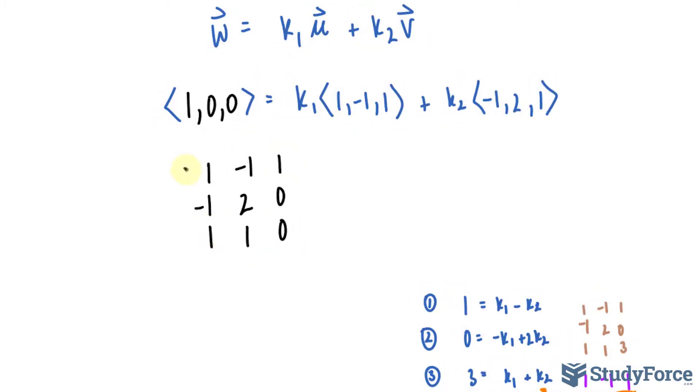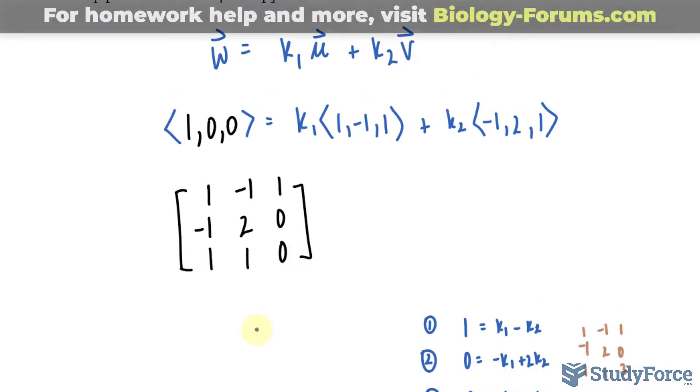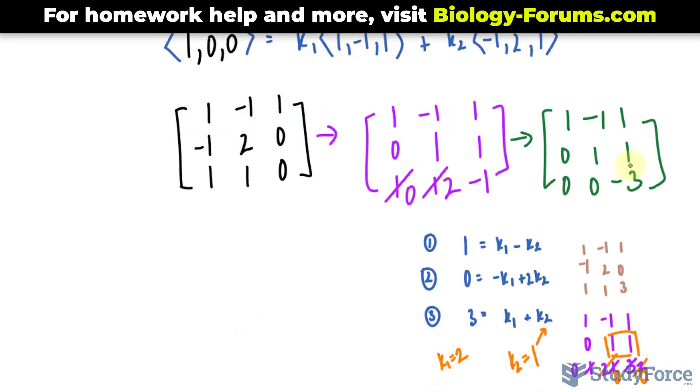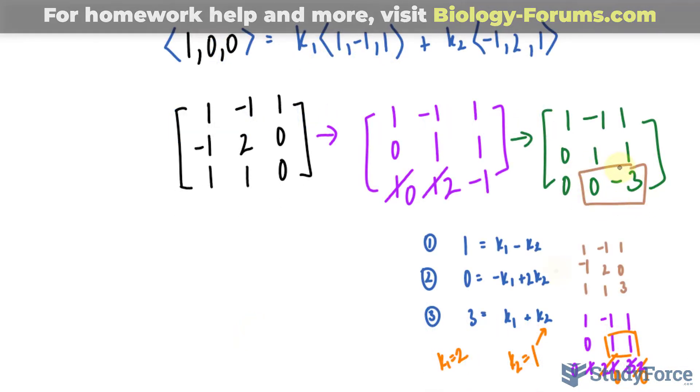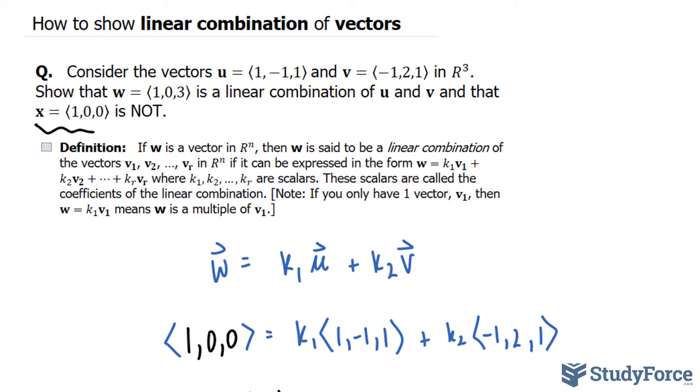As you can see, the first two columns are the same as before. And if you try to put this in reduced row echelon form, the resultant matrix will end up looking like this. This part shows an inconsistency in the matrix because what you're saying is 0 = -3, and that doesn't make sense. And there you have it. That is how to show when a vector is a linear combination of another set of vectors.